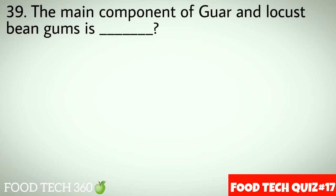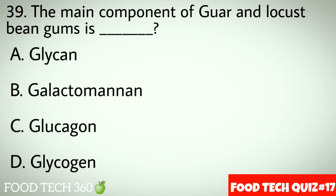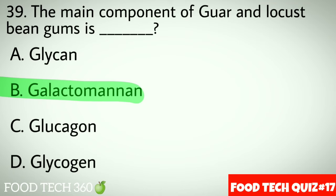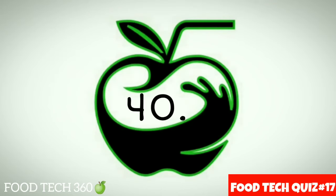Question number 39: The main component of guar and locust bean gum is dash. Options: A. Glycine, B. Galactomannan, C. Glucagon, D. Glycogen. Correct answer: B. Galactomannan.